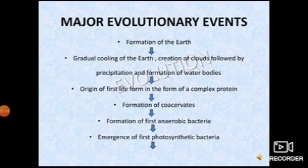Next are the major evolutionary events. In evolution, there is a gradual transformation from simple, unicellular forms to complex, multicellular, well-differentiated plants and animals — these are the major evolutionary events.